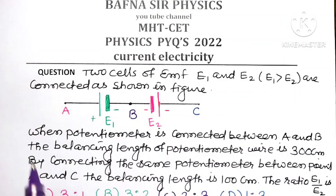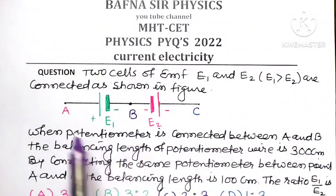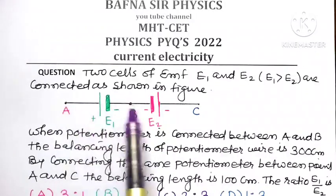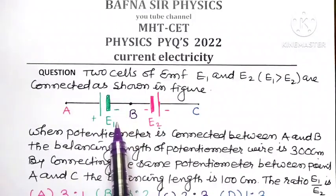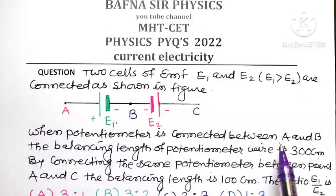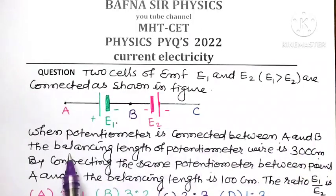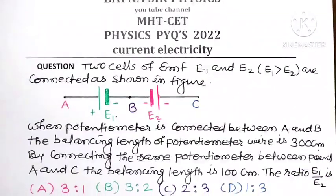Now let's see what is given when the potentiometer is connected between A and B. Between point A and B, the net EMF is E1. So when the potentiometer is connected between A and B, the balancing length of the potentiometer wire is 300 centimeters. This means for EMF E1, the corresponding balancing length L1 is equal to 300 centimeters.